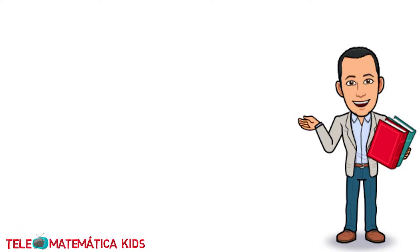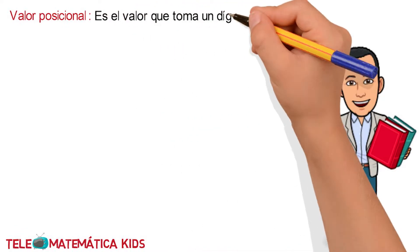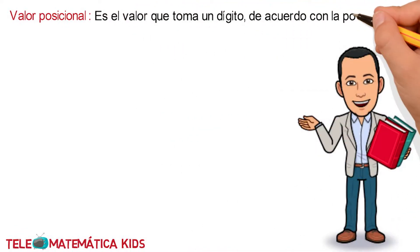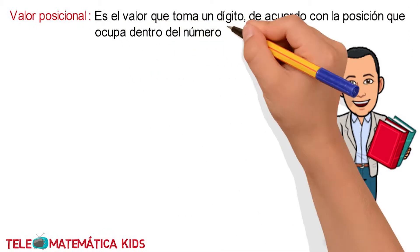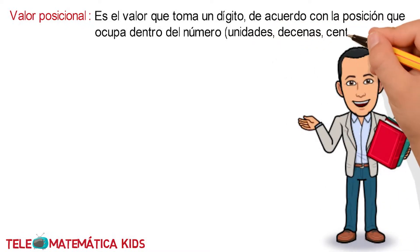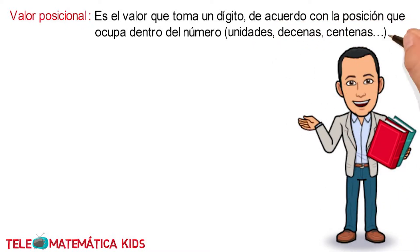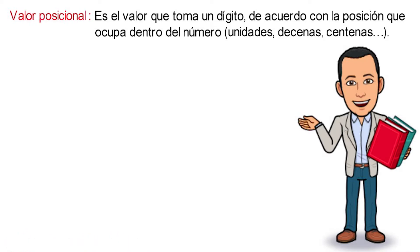To start with the video, we will introduce the concept of position value, that is defined as the value that a digit takes according to the position it occupies within the number — whether in the units, the tens, or the hundreds, among others. We will remember that each unit is worth 1, each ten is worth 10, and each hundred is worth 100.